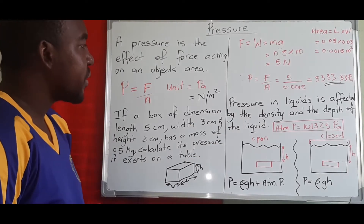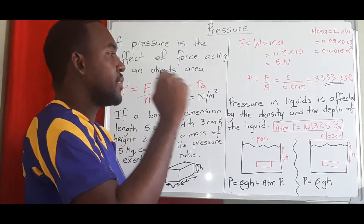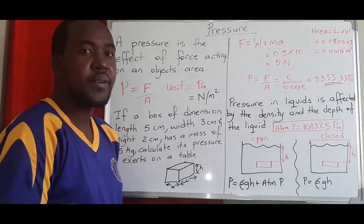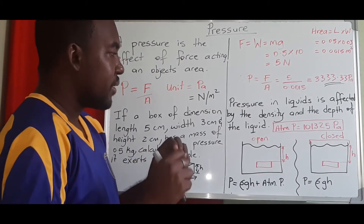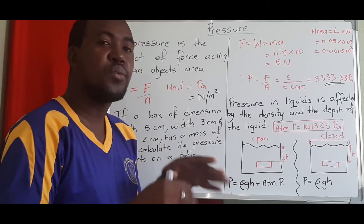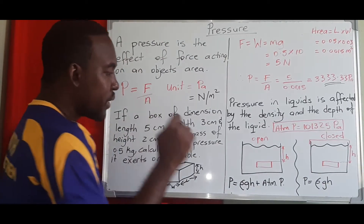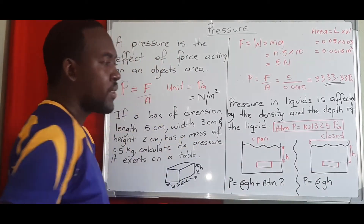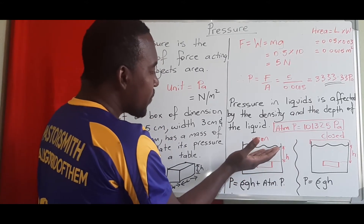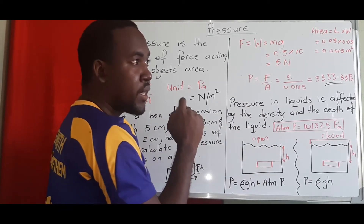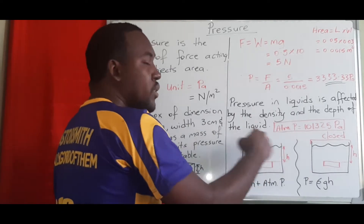Now let's look at pressure in liquids. Pressure in a liquid is affected by two things: the density of the liquid and the depth at which you want to find the pressure. If you place an object in a beaker of water, the pressure the liquid exerts on it depends on how far down it is — the deeper it goes, the more water is above it, so the greater the pressure.